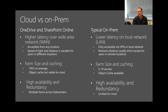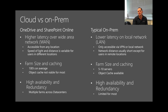Looking at farm size and caching from a typical on-prem perspective, 5 to 10 servers is fairly typical, though some farms have less and some have a lot more. You also have something called object cache available, which is an in-memory cache available on the web front-end servers of your farm. Don't worry if you don't know what that is — the key point is that it's something not available in the cloud, and therefore we have to approach things differently.